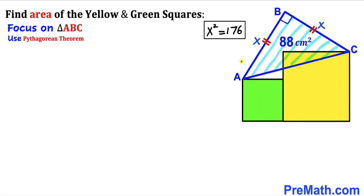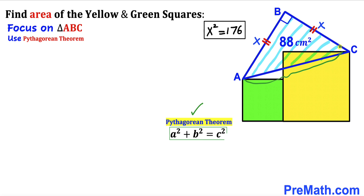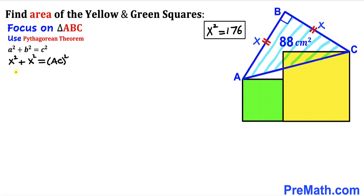Next, we apply the Pythagorean theorem on triangle ABC to find the hypotenuse AC. The Pythagorean theorem states a² + b² = c², where AC is the longest side. Substituting: x² + x² = AC². Combining like terms gives AC² = 2x². Since x² = 176, we substitute to get AC² = 2 × 176.